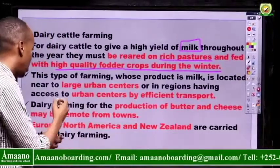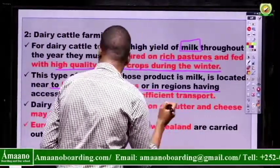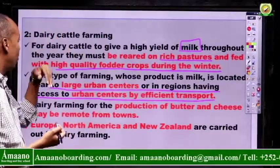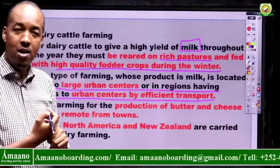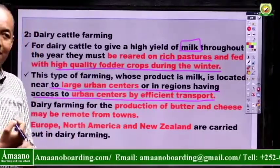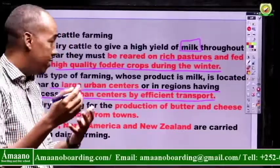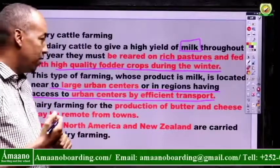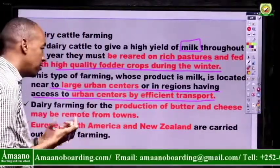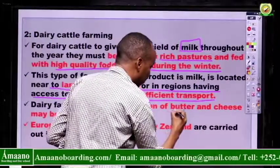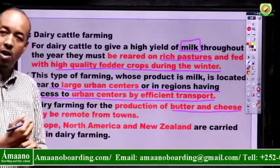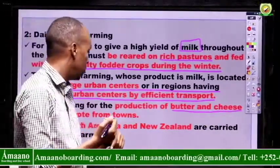This type of farming, whose product is milk, is always located near large urban centers or in regions with access to urban centers by fast transport, because milk can perish easily and does not last many days. Dairy cattle farmers are always close to the town and market, or have a very good transport network. There is also another objective for dairy cattle farming — not only for milk but for butter and cheese. Milk can be processed into butter and cheese, and those products can be farther from towns since they last longer. Europe, North America, and New Zealand are the main regions where dairy farming is carried out.